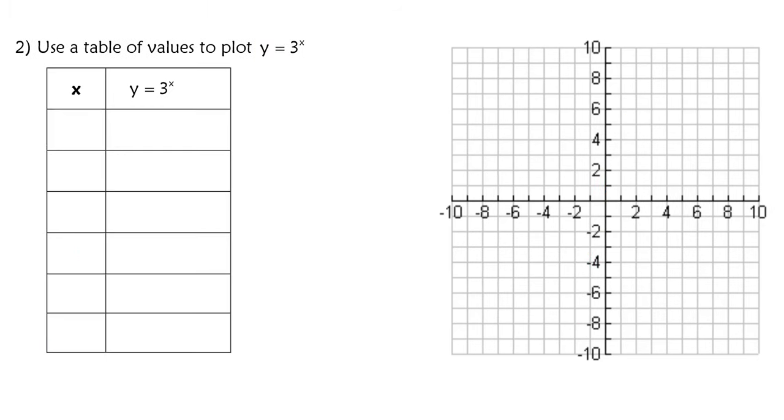Now our next example looks really similar to that, except this is called an exponential growth function. Instead of linear, this is called exponential growth. Even though this looks a lot like what we had before, it's not 3 times x. This is 3 to the x power. We're going to use a table to graph this to see what it would look like. I'm going to use negative 2 all the way to 3 instead of just negative 2 to 2.